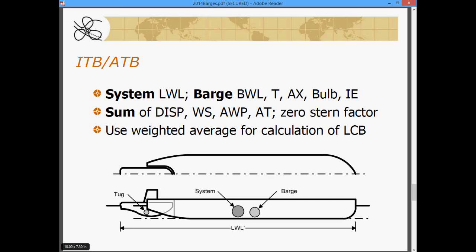And we want to use the cumulative sum of displacement, wetted surface, area of water plane, transom area. That includes, I particularly want to make note of the transom area. We want to add the sum of the transom areas of the barge and the tug. And the stern factor that you might be using if you're using the Holtrop method should be set to zero as an average stern factor.